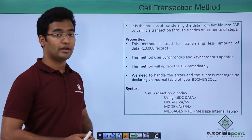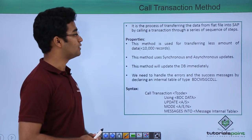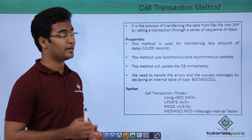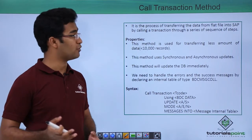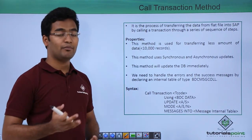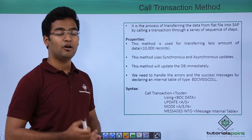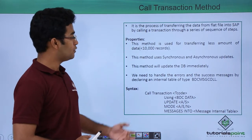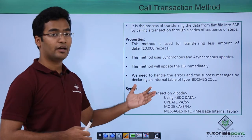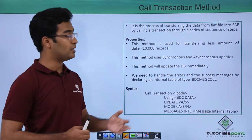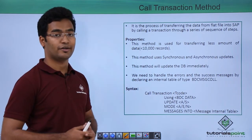Let us discuss the call transaction method. It is the process of transferring data from the flat file into SAP by calling a transaction through a series of sequence of steps. Flat file means a simple Excel file or a text file itself. This method is used for transferring less amount of data, data below 10,000 records.